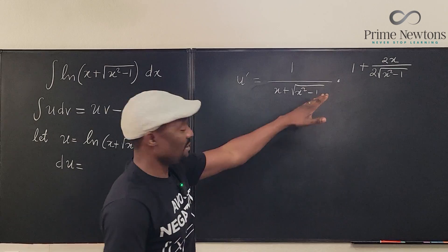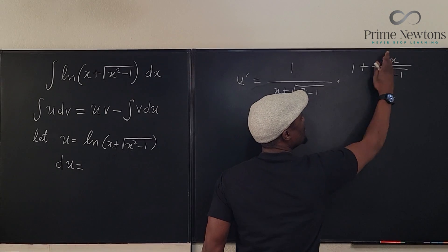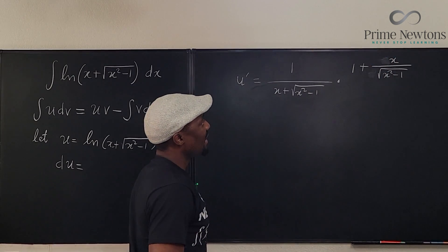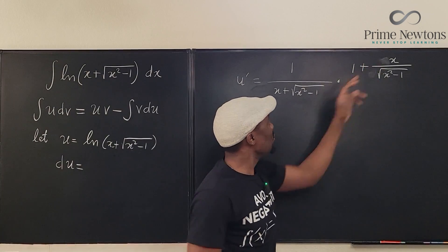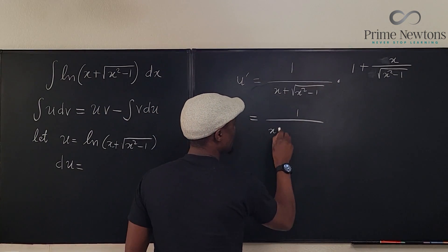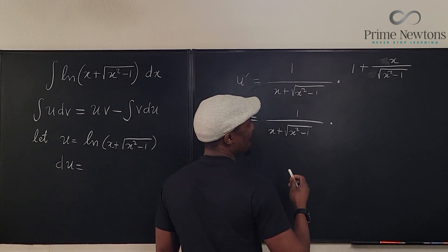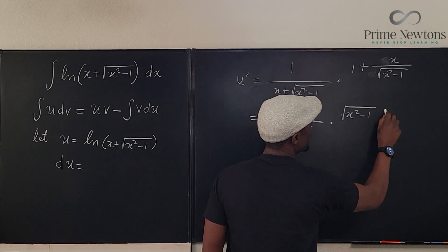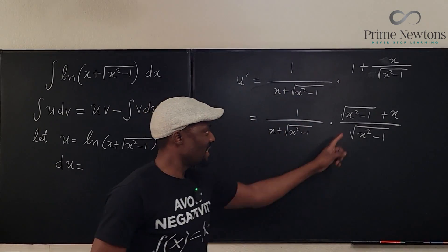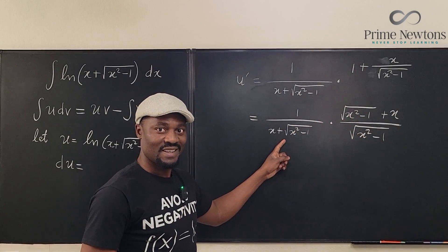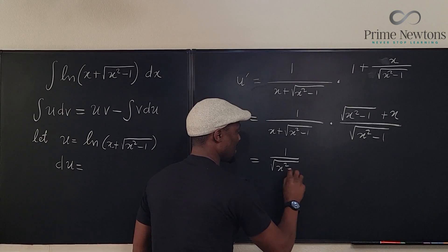Now let's simplify. You can see that this 2 will cancel that 2. We can make this into a single rational expression by multiplying by the square root of x squared minus 1. So we end up with 1 over x plus the square root of x squared minus 1, multiplied by — after simplifying — square root of x squared minus 1 plus x over square root of x squared minus 1. That numerator is exactly what's in the denominator, so canceling gives us 1 over the square root of x squared minus 1.